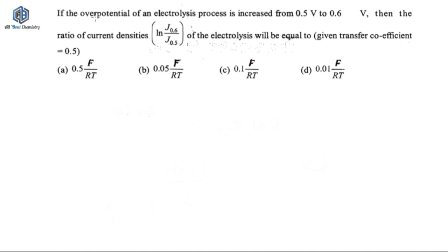So it was asked that if the overpotential of electrolysis process is increased from 0.5 volt to 0.6 volt then the ratio of current densities that is ln J0.6 to J0.5 of the electrolysis will be equal to and it's given that the transfer coefficient is 0.5.